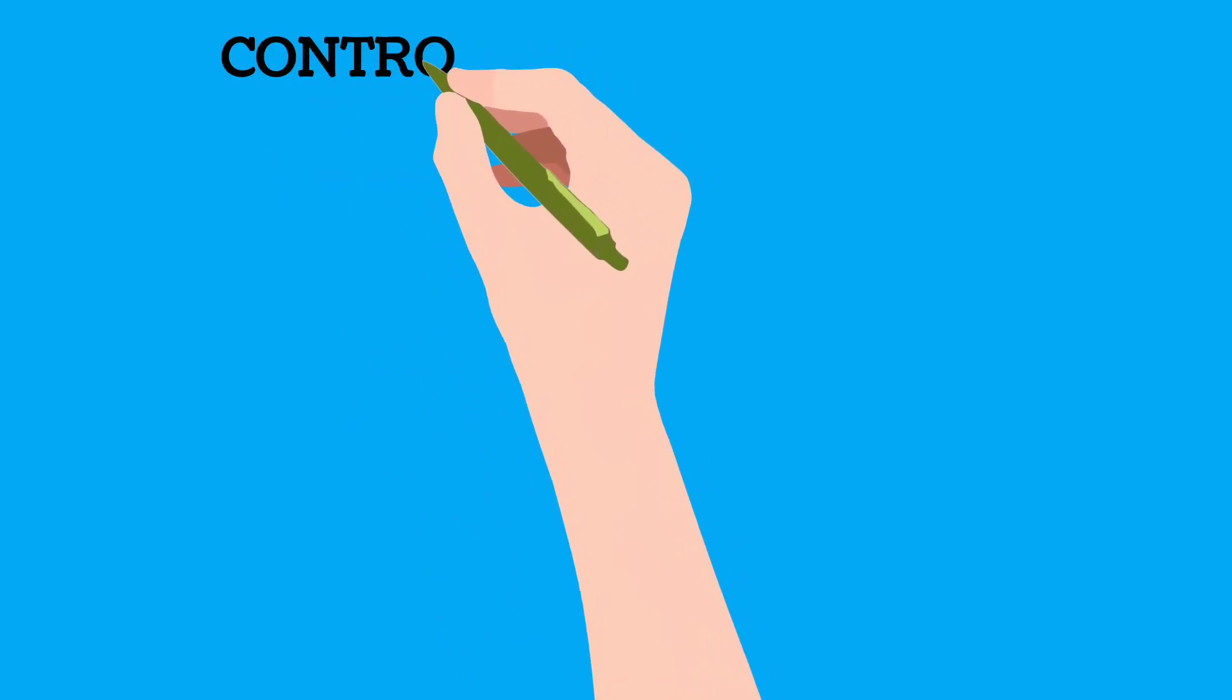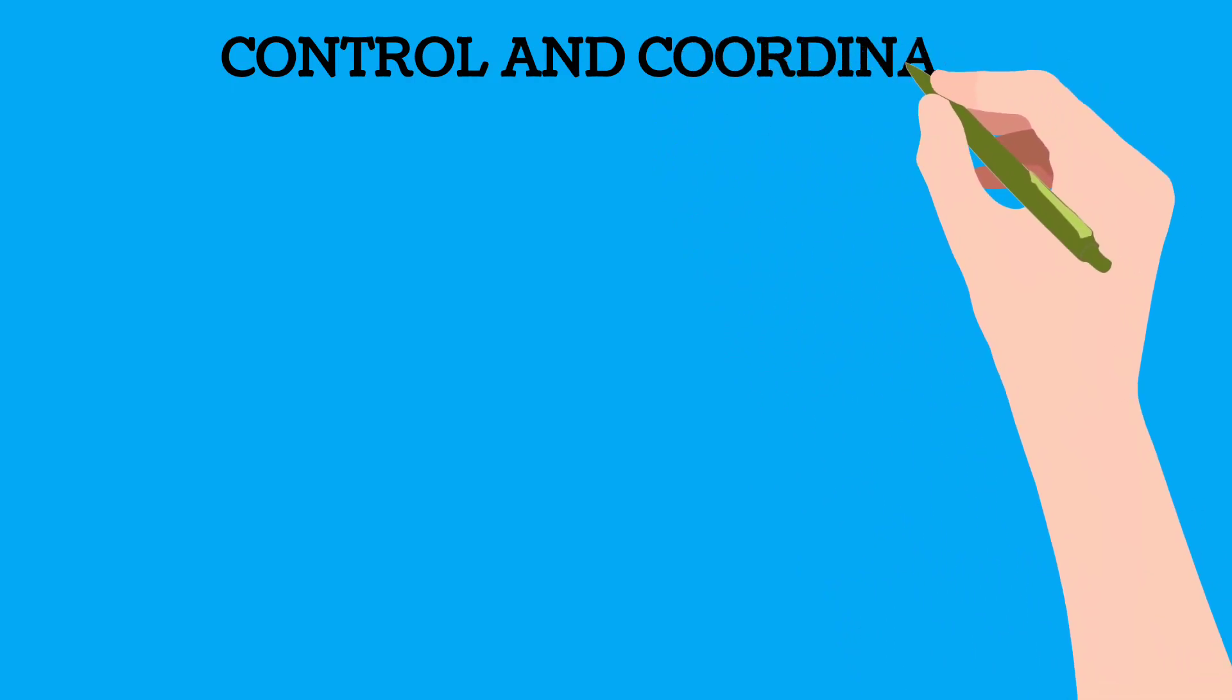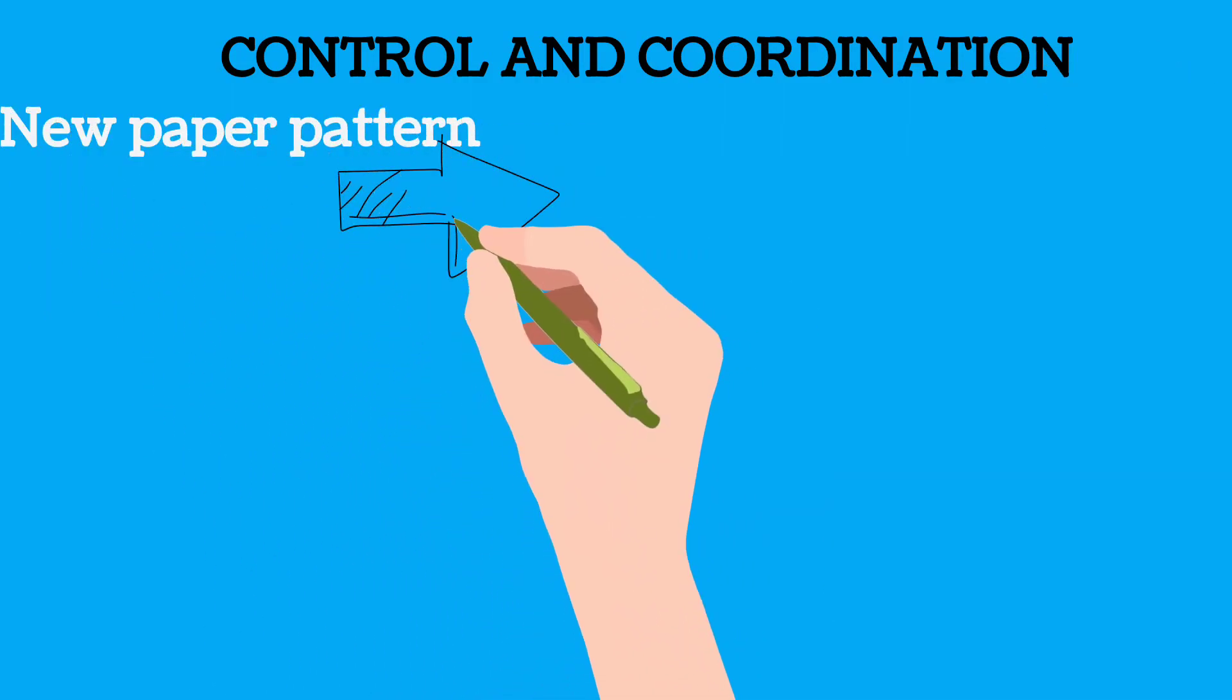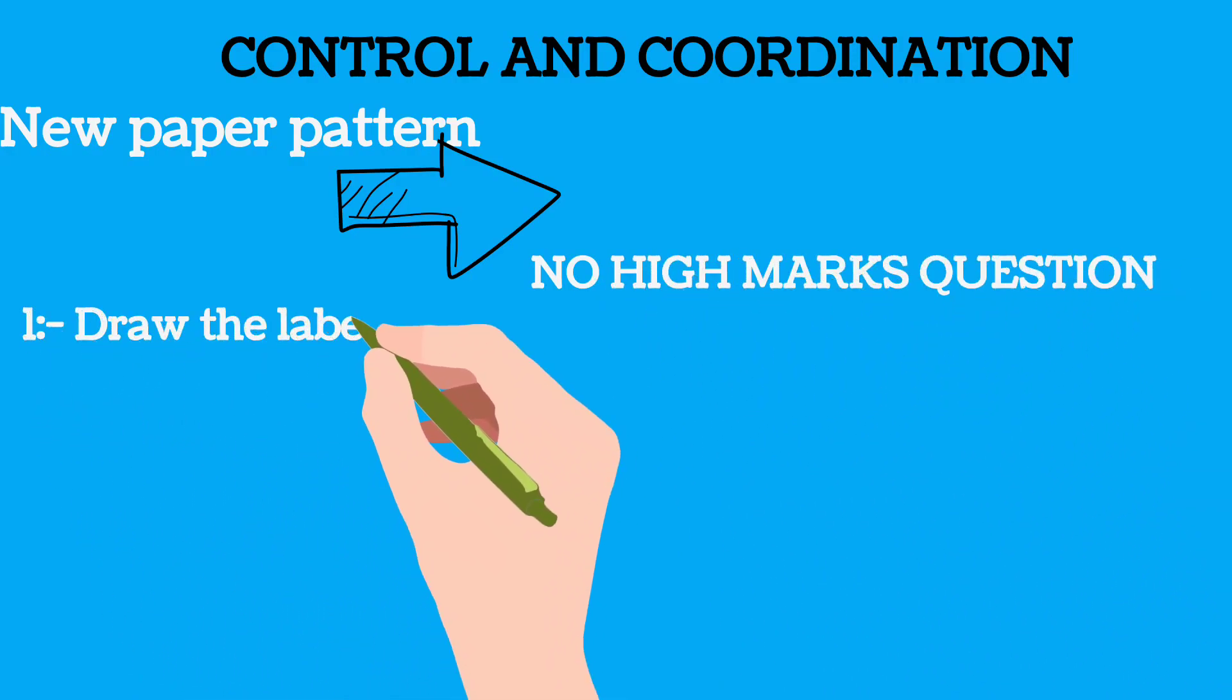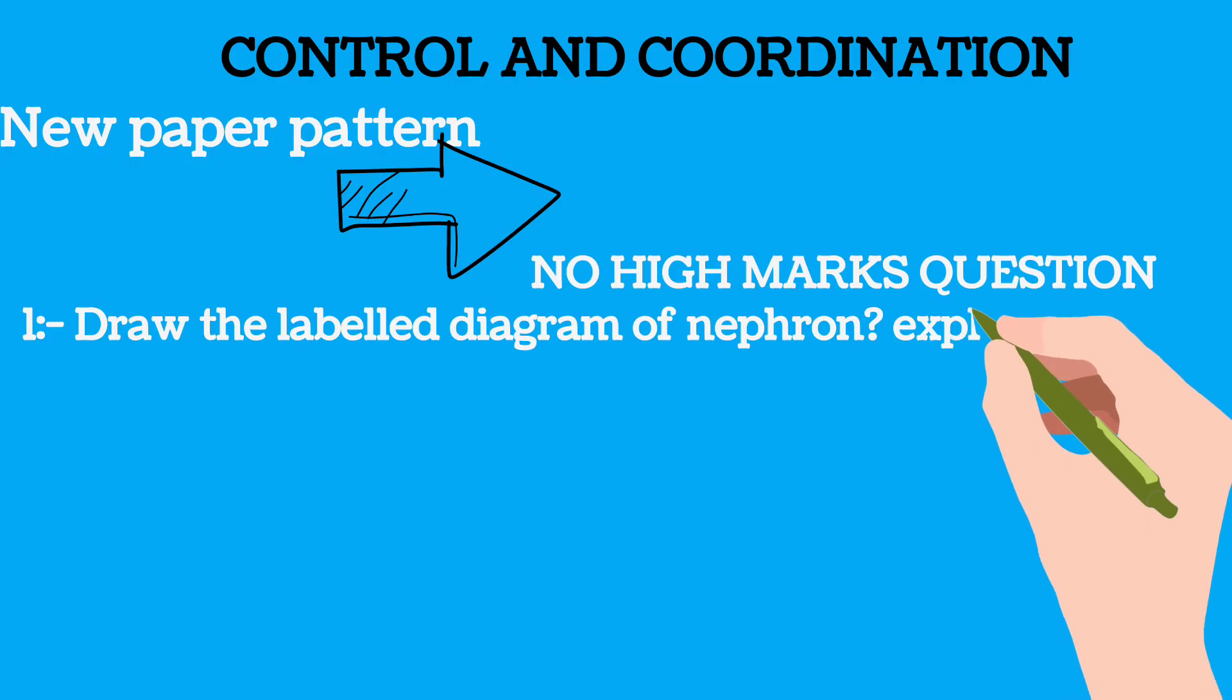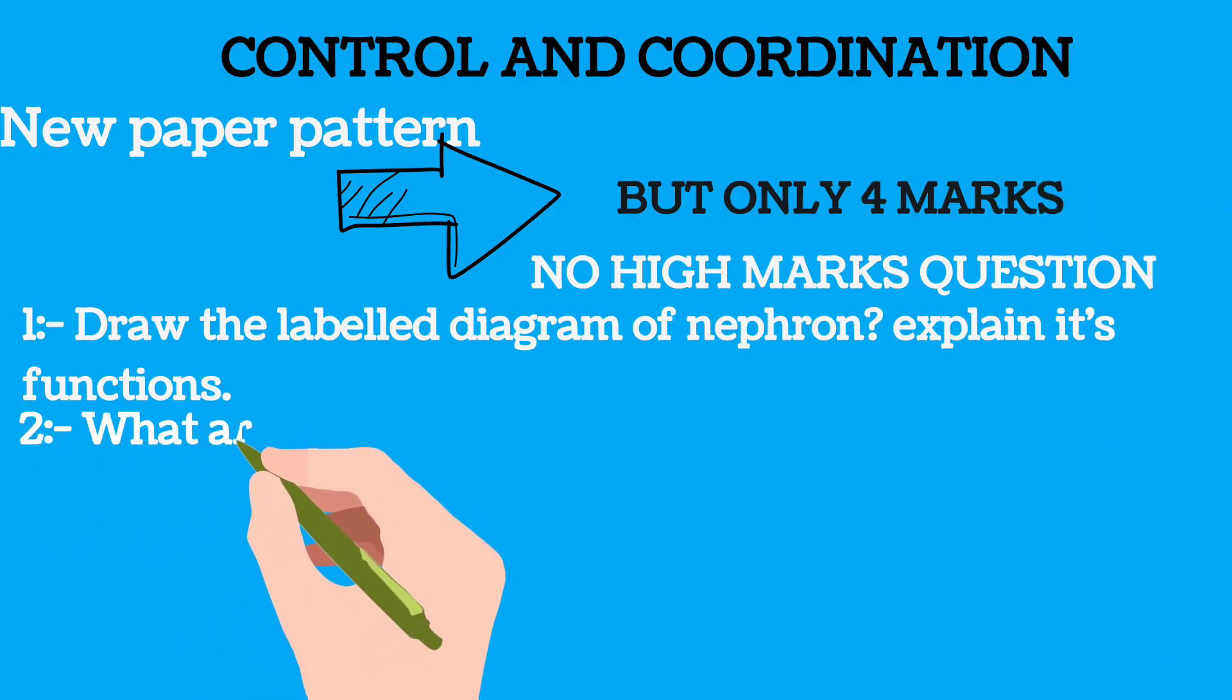In the earlier videos we discussed about the life processes, the important questions, the paper pattern, and some of the questions from the life processes. Students, you know the paper pattern has changed. For example, draw the labeled diagram of nephron, or explain its functions - these types of questions can be asked.